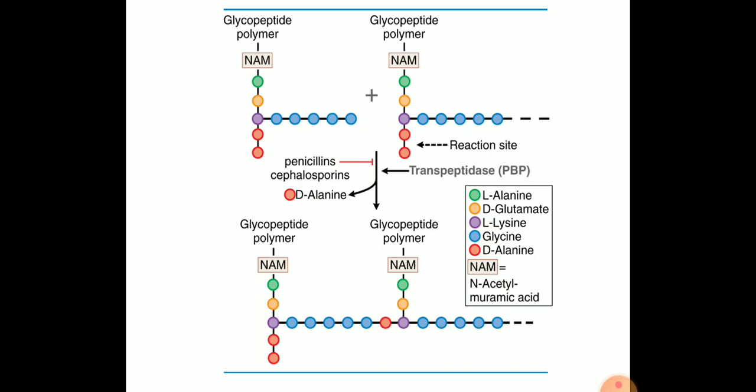The peptidoglycan is common to both gram positive and gram negative organisms and is predominant in gram positive organisms forming almost 90 percent of the cell wall. It is thick with layer after layer of the ingredients.